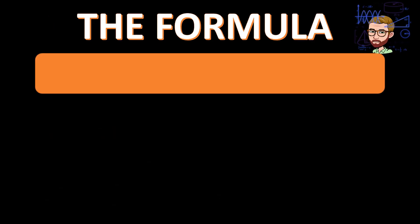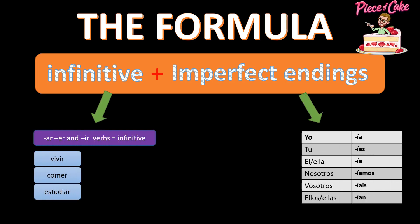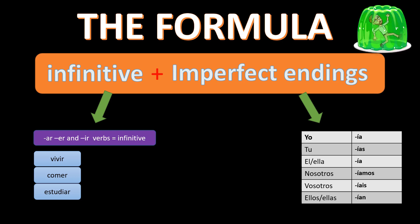The formula for the conditional tense is really simple. All you need is the infinitive of the verb and the imperfect endings. The imperfect endings are really easy, but if you can't remember them, look back at our video on the imperfect. And all you do is stick them together.